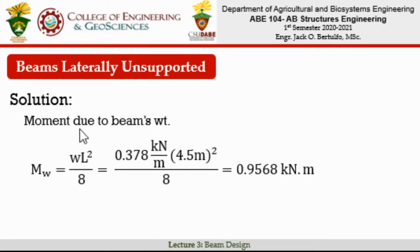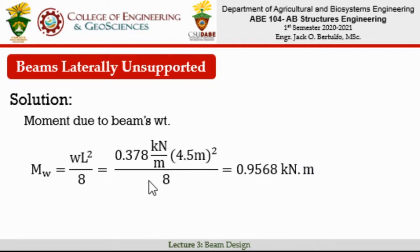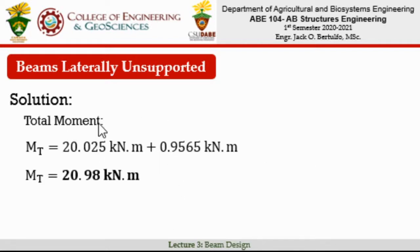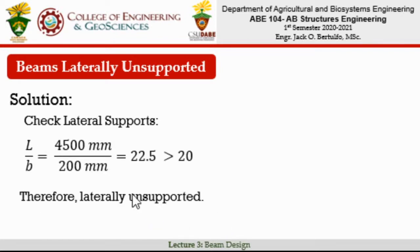Since the self-weight is uniformly distributed, the maximum bending moment from it is wl² / 8. Substituting the values, the maximum bending moment from the beam's self-weight alone is 0.9568 kN·m. Adding this to the moment from the applied loads, the total maximum bending moment is 20.98 kN·m.